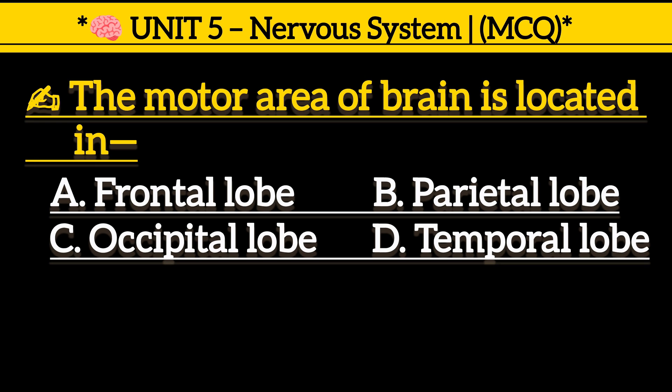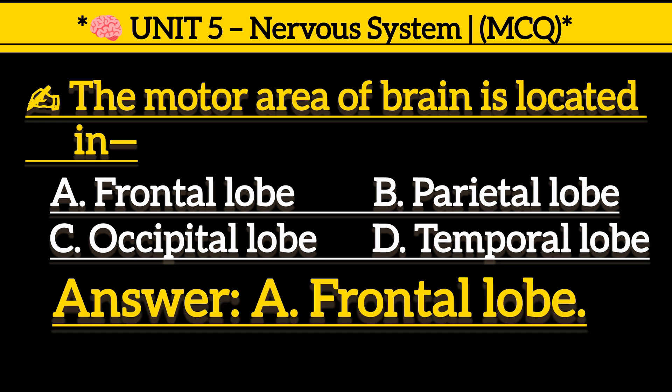The motor area of the brain is located in: Option A, frontal lobe. Option B, parietal lobe. Option C, occipital lobe. Option D, temporal lobe. Correct answer is Option A, frontal lobe.